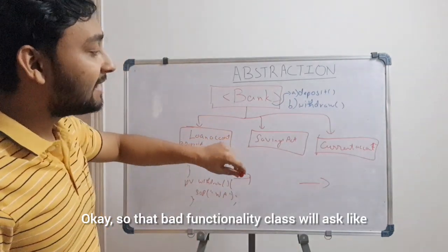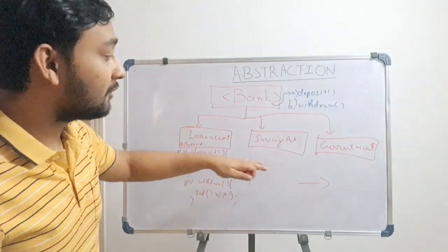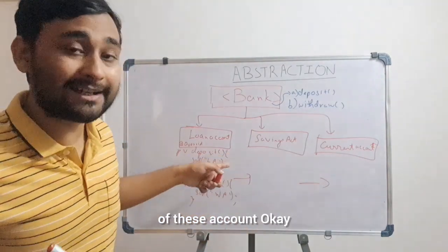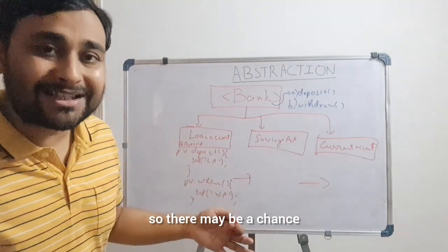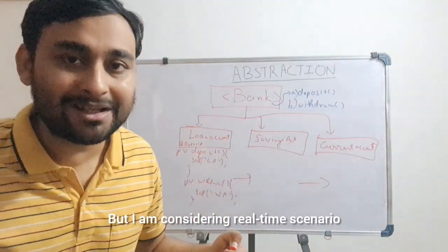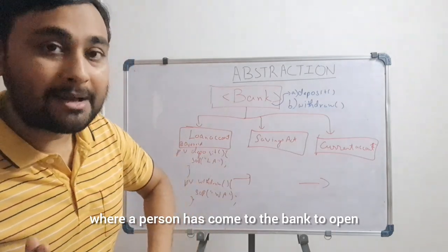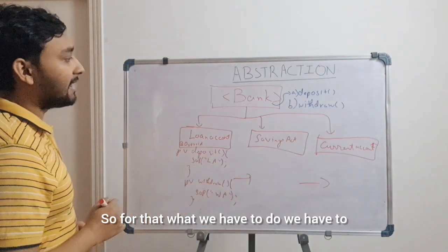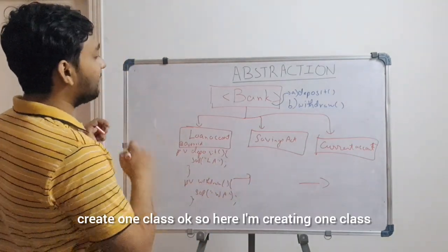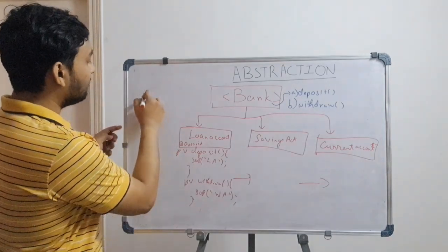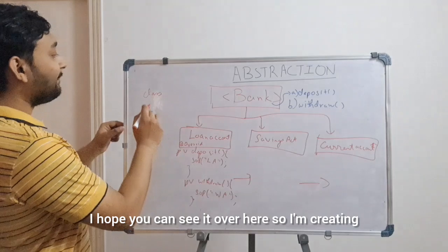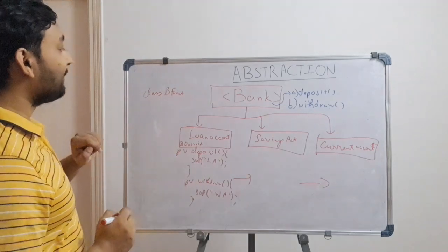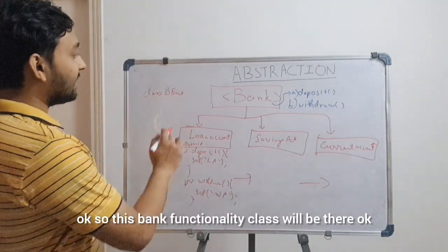Same thing you can do in saving account and current account — override the methods and write your own business logic. Now the next step: we have created all three classes which implement the bank interface. One important thing is still missing — we have to create one big bank functionality class. That bank functionality class will ask which account the person wants to open. One person will not open all the accounts; a person has come to the bank to open one of these accounts. So I am creating one bank functionality class.